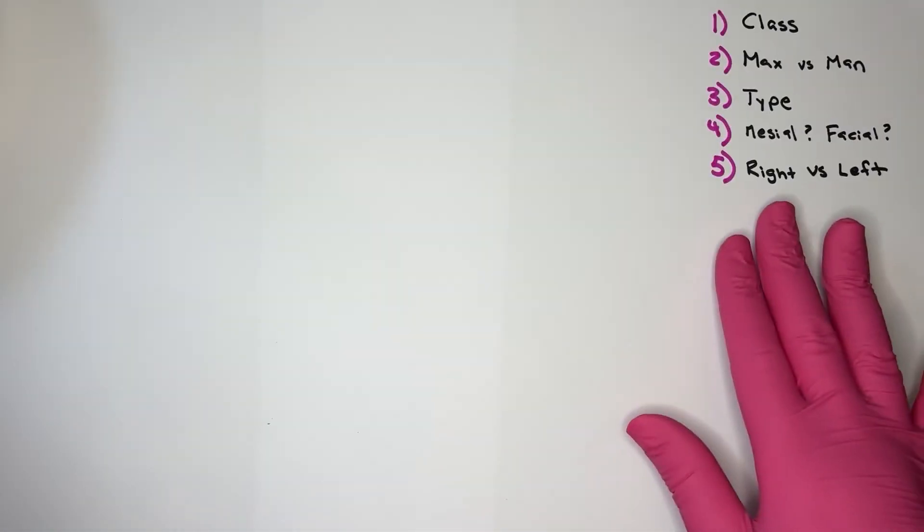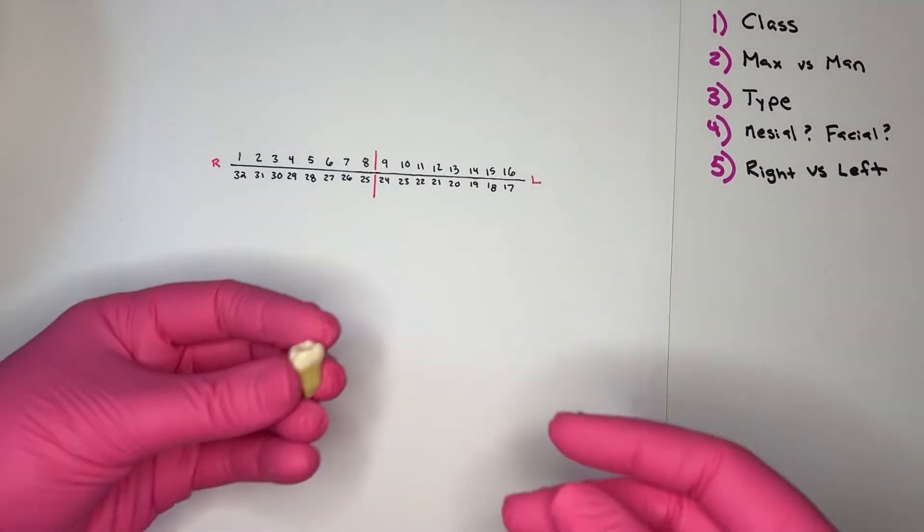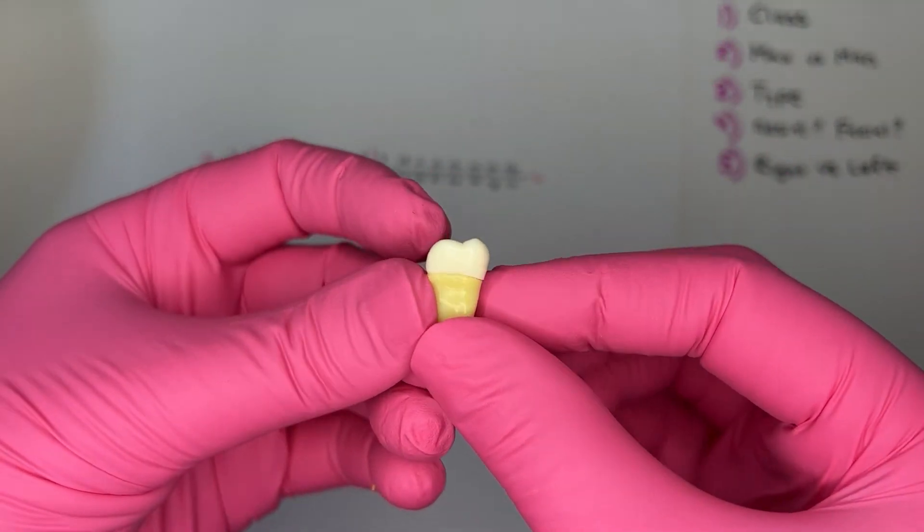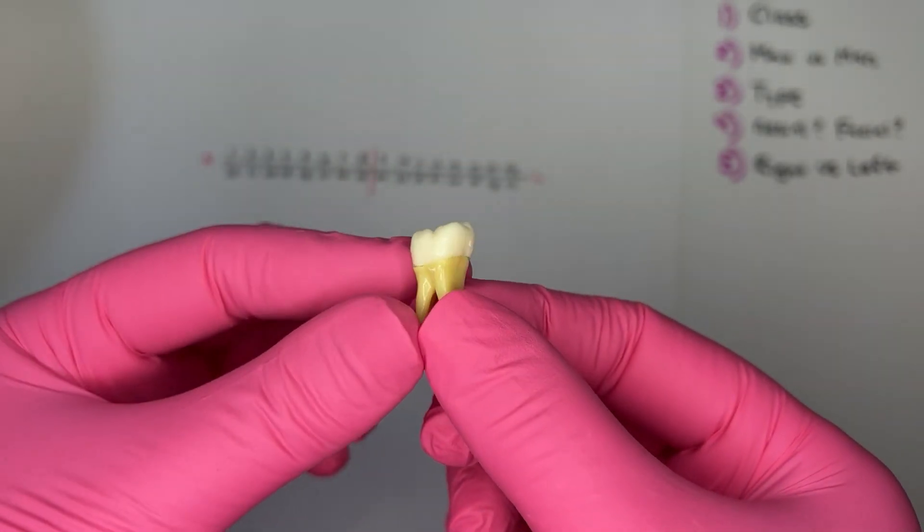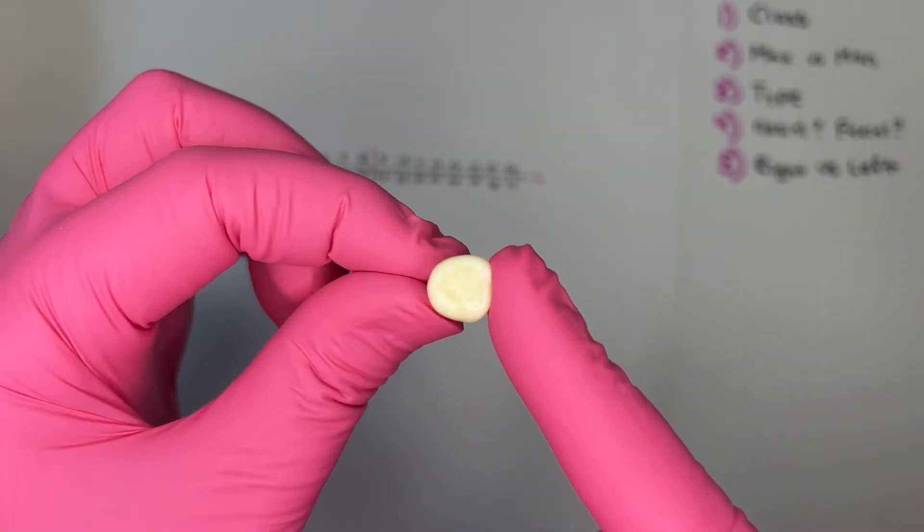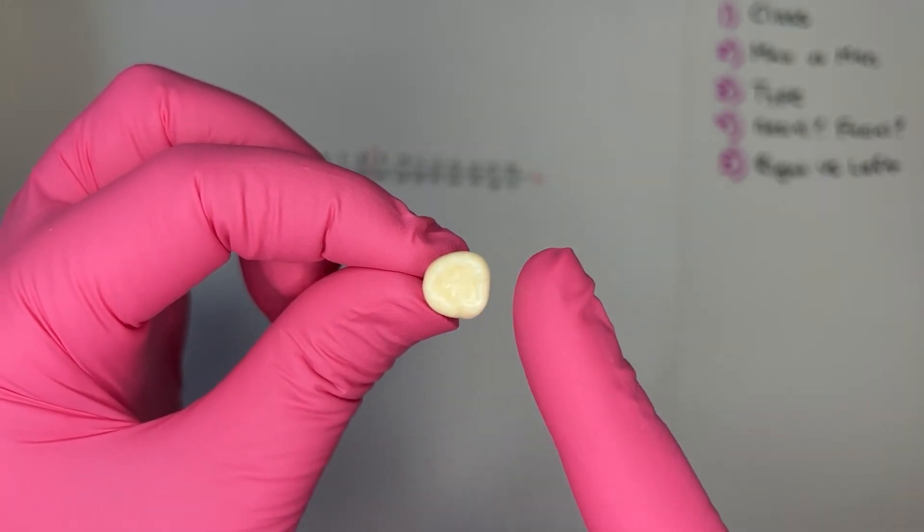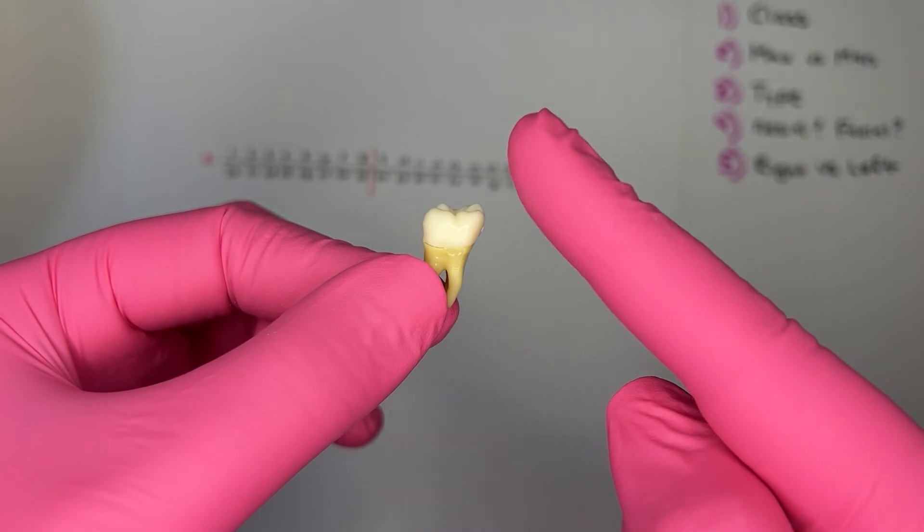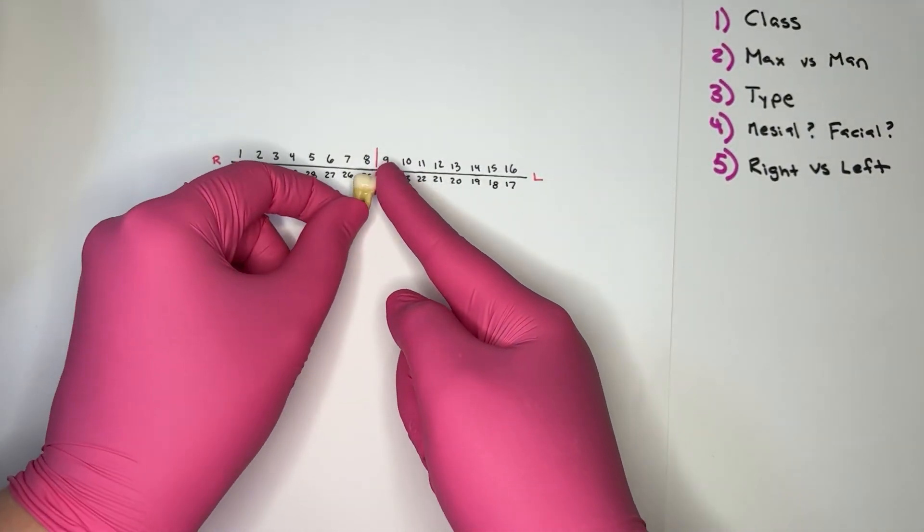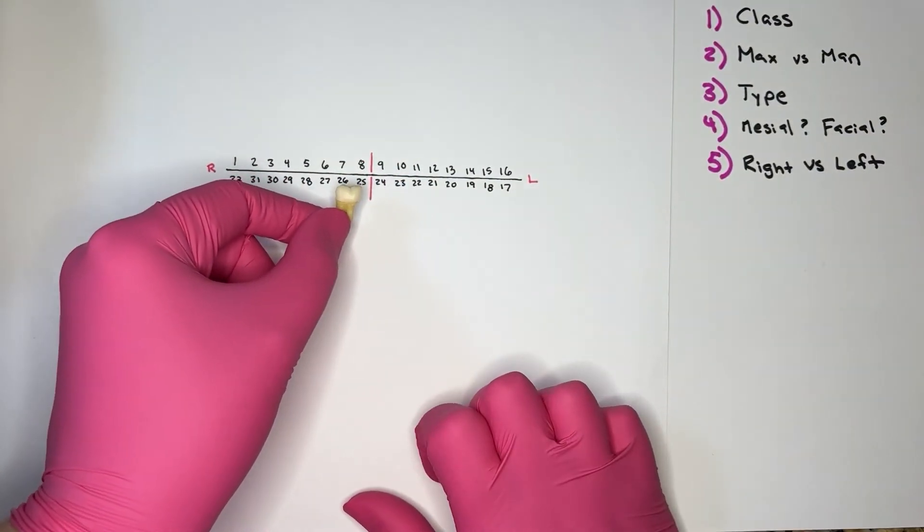To determine left versus right, we take our imaginary mouth, have that facial, so that side that it was tilted away from with those less sharp cusps facing us, mark the mesial, which was that straighter outline from the occlusal, or the side the roots are tilted away from. So we're going to hold that and bring it to the midline of our imaginary mouth.